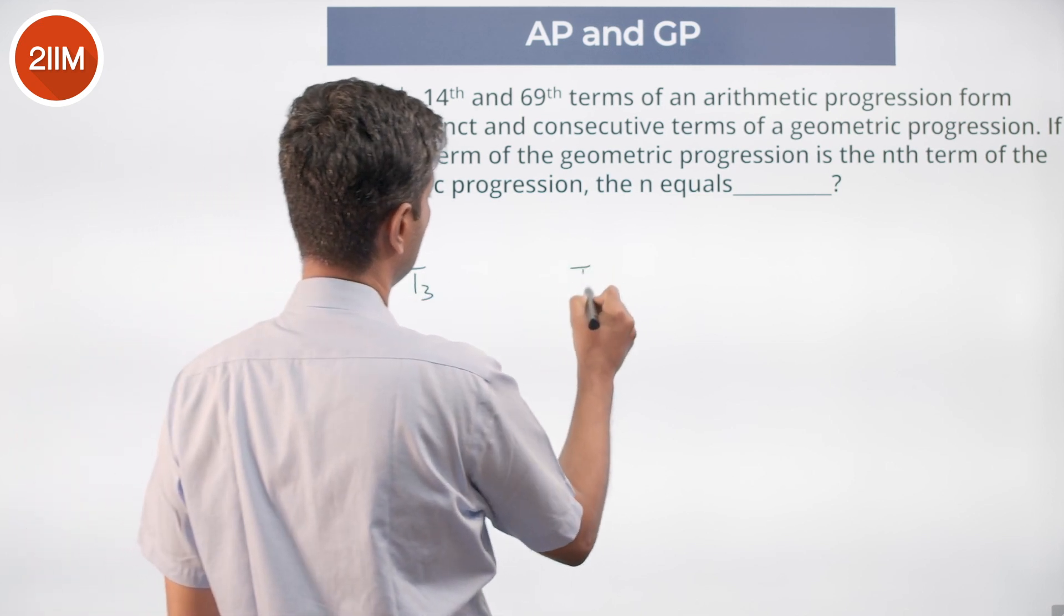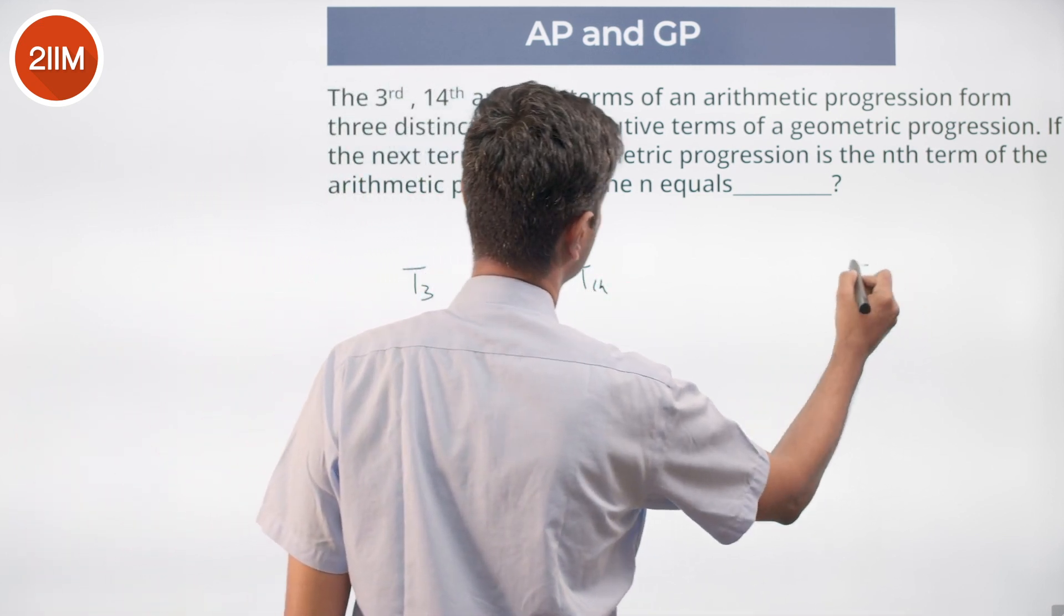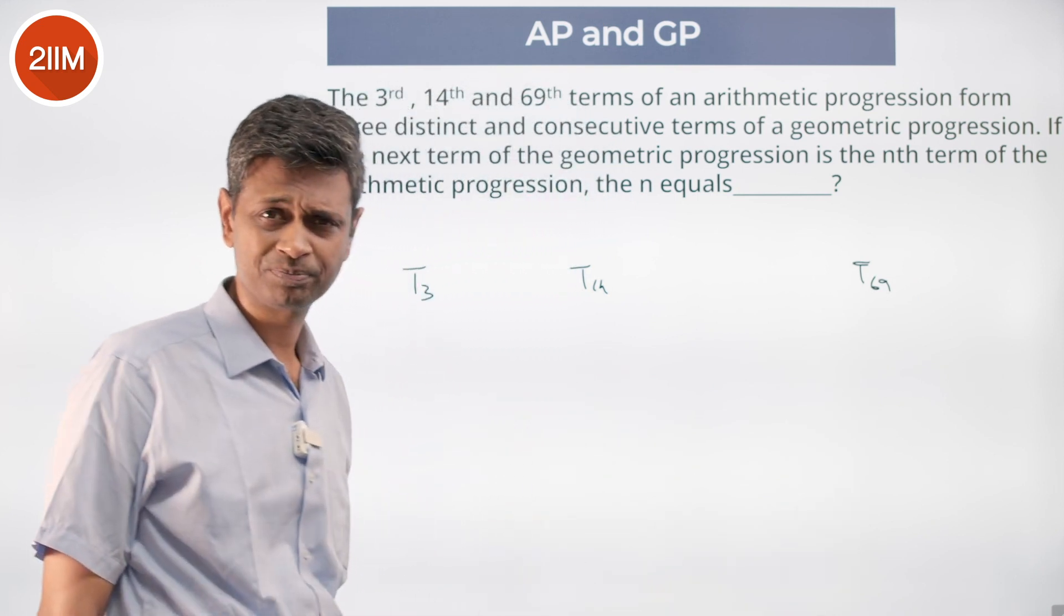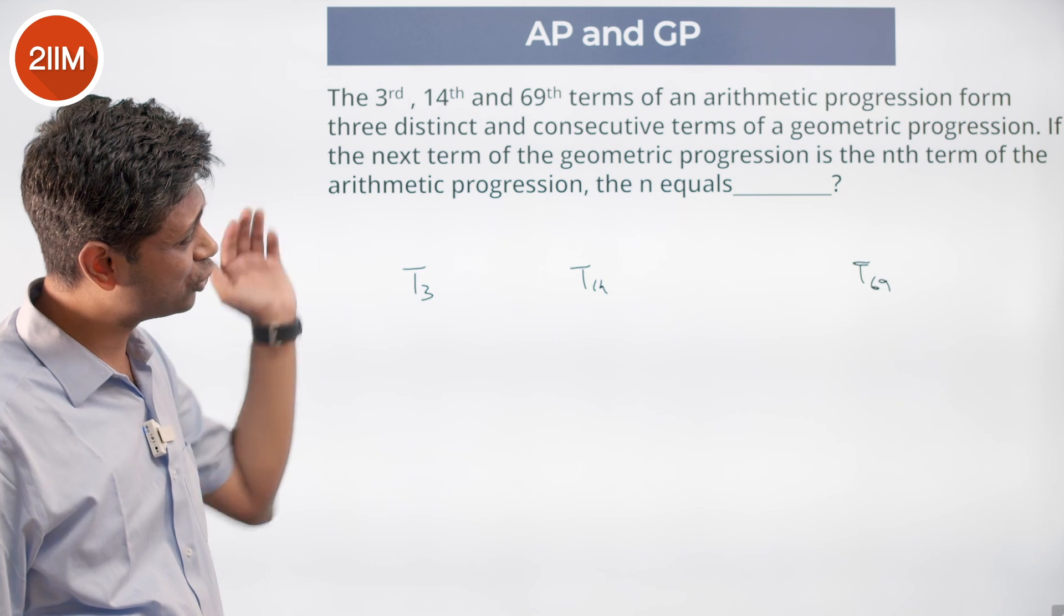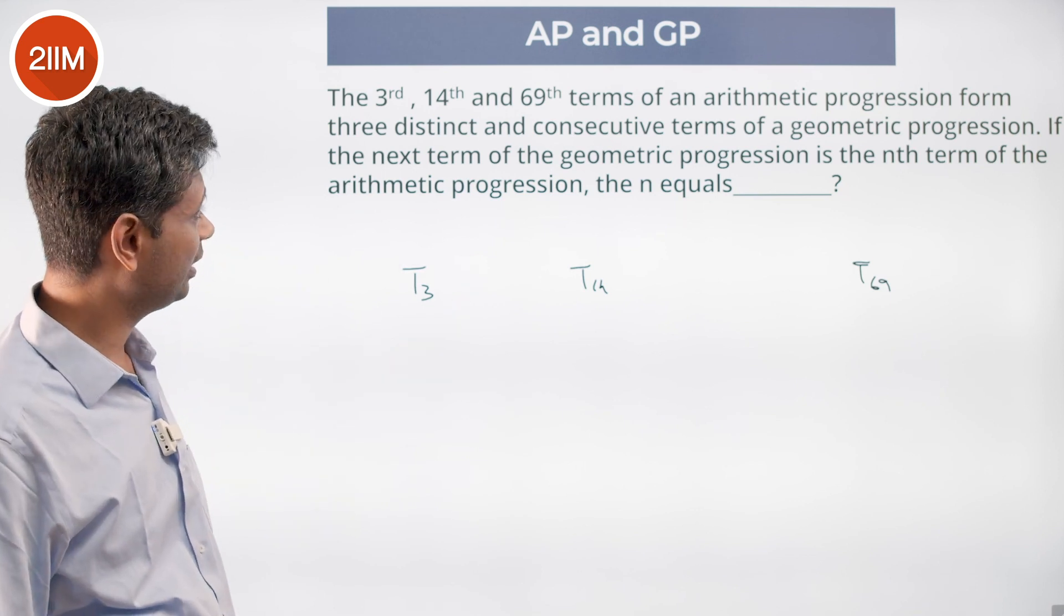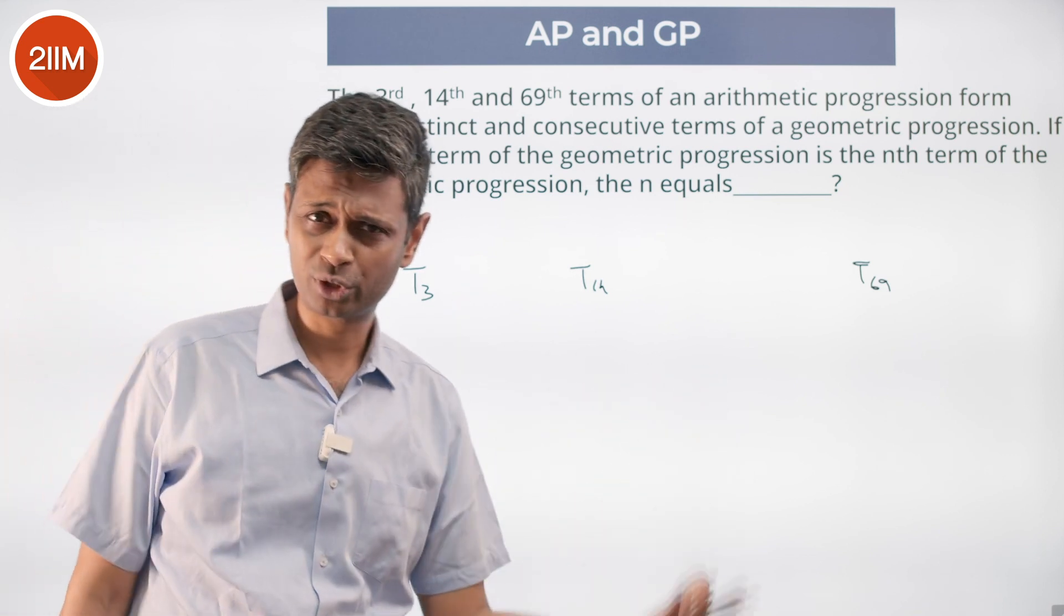t3, t14, t69 geometric progression. I have to figure out the next term of this geometric progression and then bring it back to the arithmetic progression.